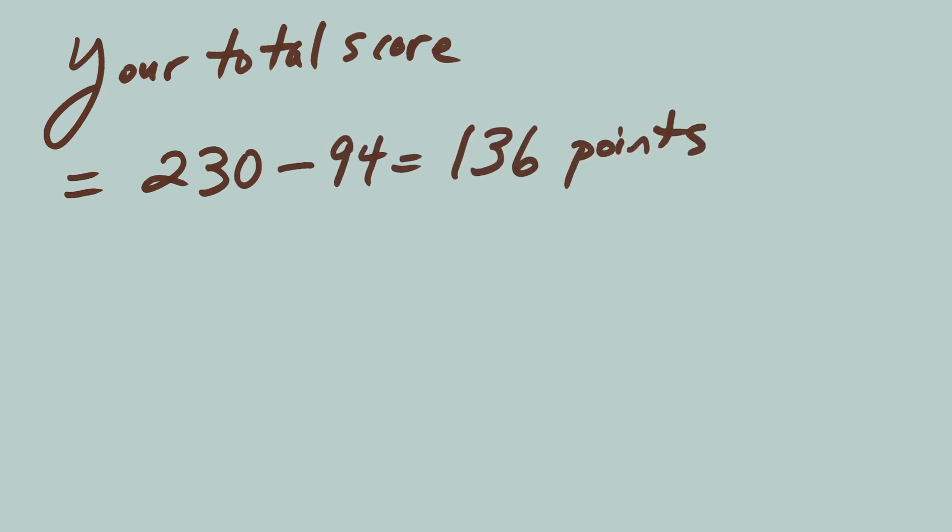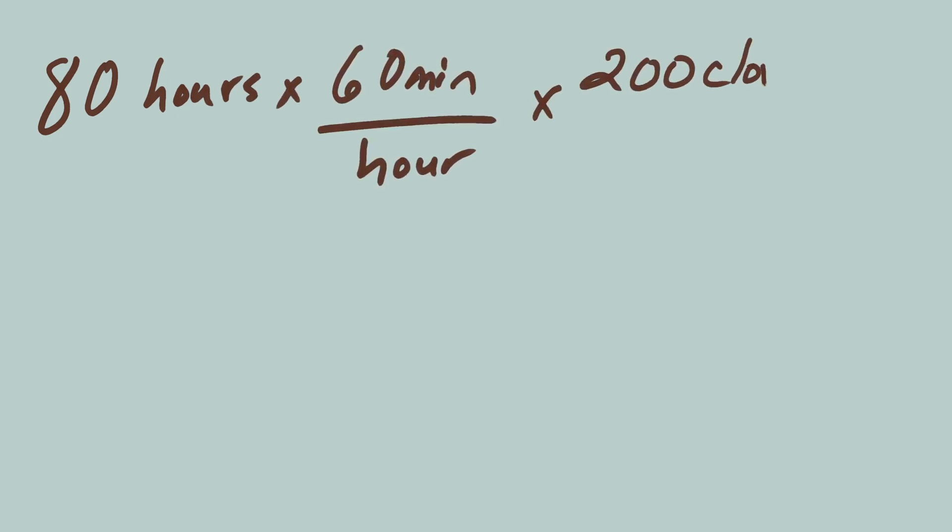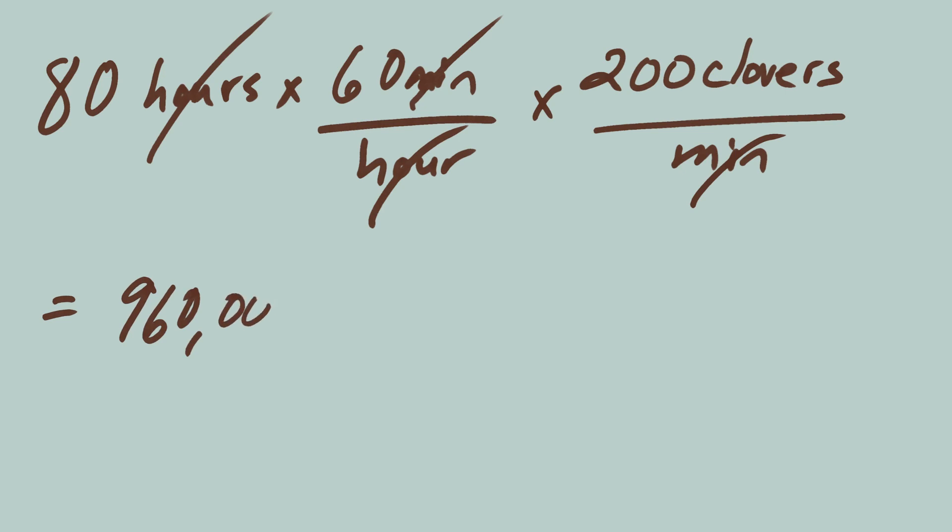What about your friend? First, we need to go back to the number of clovers he'll find. 80 hours times 60 minutes per hour times 200 clovers per minute. Hours cancel, and minutes cancel, leaving clovers. Multiply through, and you'll get 960,000 clovers.